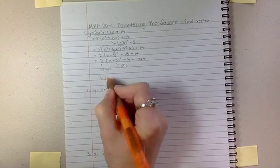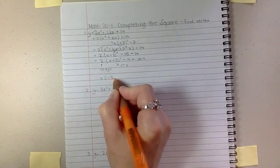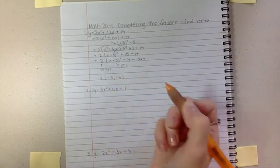So our vertex then, which usually is what we're looking to find, is going to be negative 3 and negative 4. Hooray!